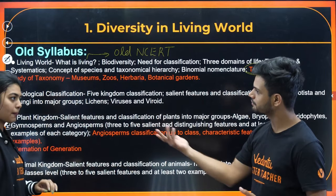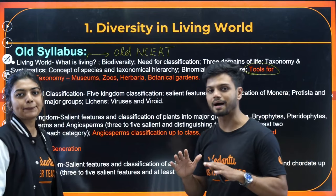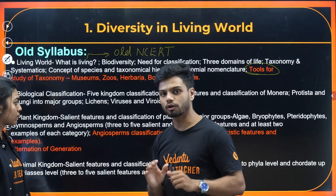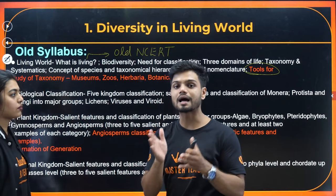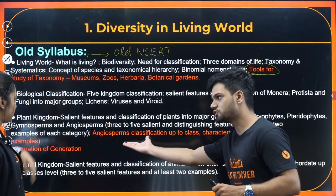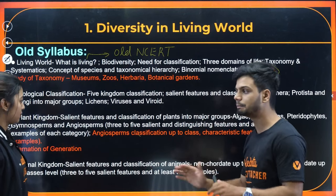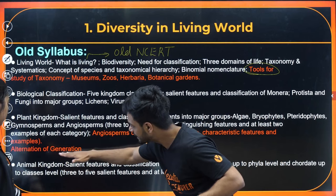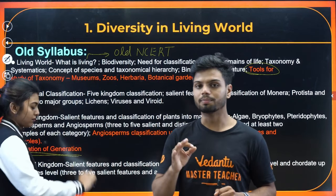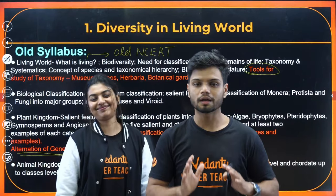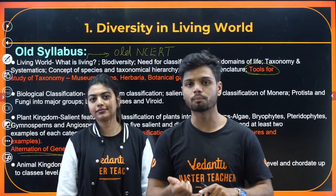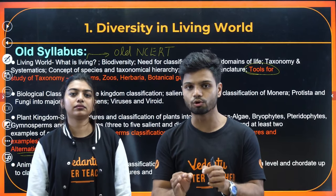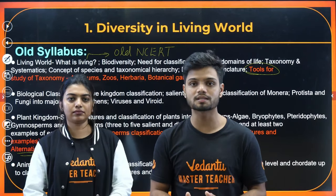Moving to bioclassification — nothing has been deleted, everything is the same as before. Coming to the next one, that is Plant Kingdom: the last part of it, that is angiosperms, has been completely removed. Along with that, the alternation of generation has also been removed. But students, in order to understand the life cycles of your bryophytes, algae, pteridophytes, and gymnosperms, you need to know what is sporophyte and what is gametophyte.